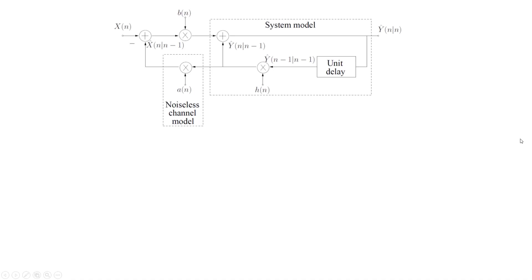If we have a closer look at the block diagram of the Kalman filter, the first thing that strikes our attention is that, in addition to variables we already knew from the signal and channel models — such as the observable process X, and the deterministic sequences A and H — we have a set of other variables not yet defined. These variables, marked with a hat and indexed by two time indices, are all linear minimum mean squared error estimates of the processes Y and X, obtained at different times and using different numbers of observations.